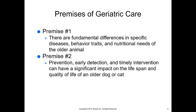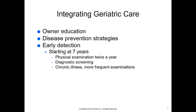The premises of geriatric care: premise one is that there are fundamental differences in specific diseases, behavior traits, and nutritional needs of the older animal. Premise two is that prevention, early detection, and timely intervention can have a significant impact on the lifespan and quality of life of an older dog or cat. Just as we see puppies and kittens more frequently, we want to see geriatric pets more frequently as they age.